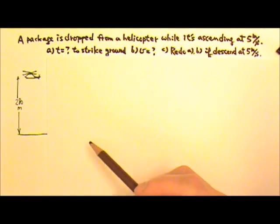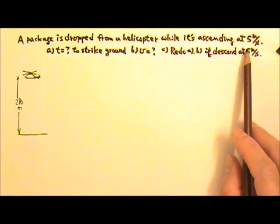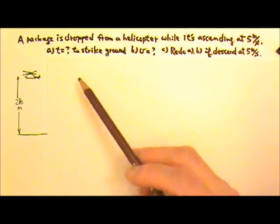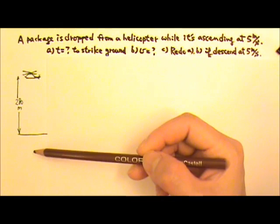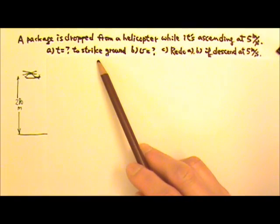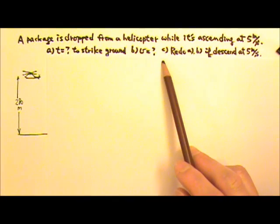Now we're going to look at an asymmetric problem — for example, an object is tossed upward and caught either at a height below or above its starting height. For example, a package is dropped from a helicopter while it's ascending at 5 meters per second. The moment the package is released, the helicopter is 280 meters above ground. How long does it take for the package to strike the ground? At what speed does it strike the ground?